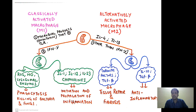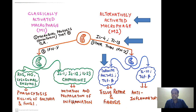In the alternative pathway of macrophage activation, any cytokine other than interferon gamma can stimulate this pathway, especially interleukin 4 and interleukin 13. Once M2 is activated, it releases growth factors and TGF-beta involved in tissue repair and fibrosis. Alternatively, it also releases interleukin 10 and TGF-beta, which are anti-inflammatory in nature.